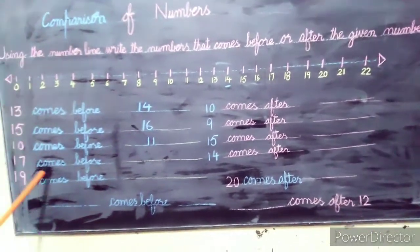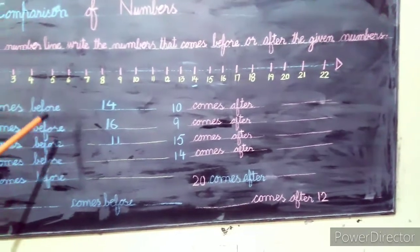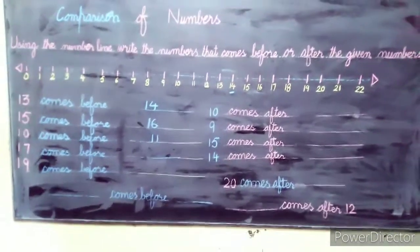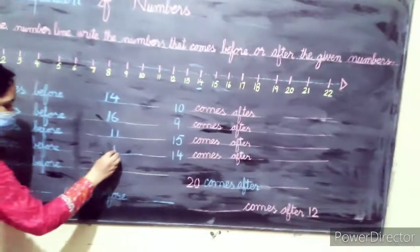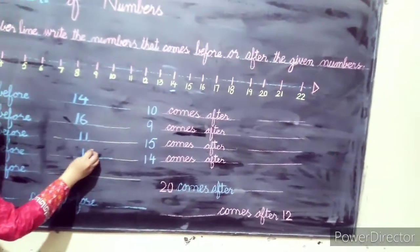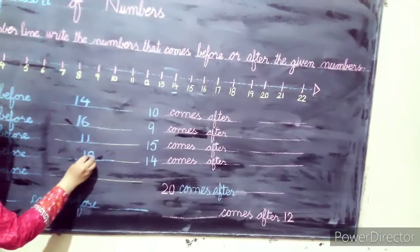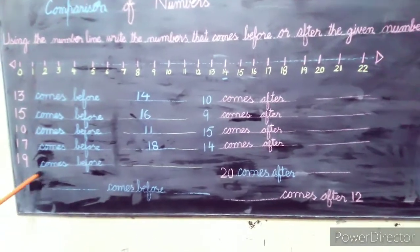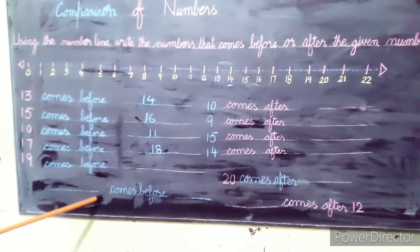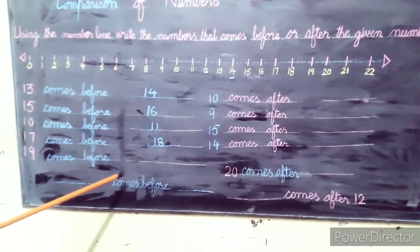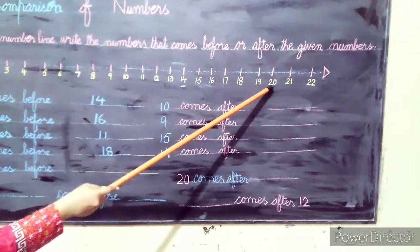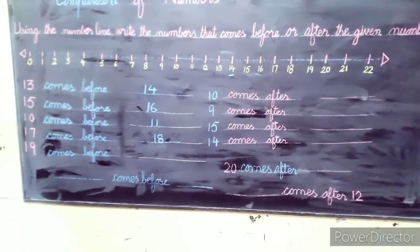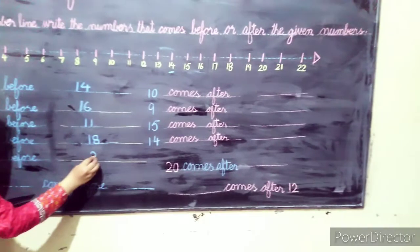Next, 17 comes before 18. Then, 19 comes before 20. So the answer is 19 before 20.